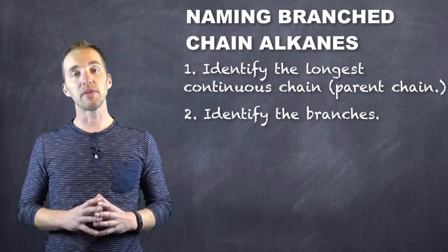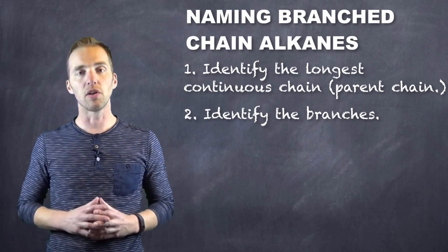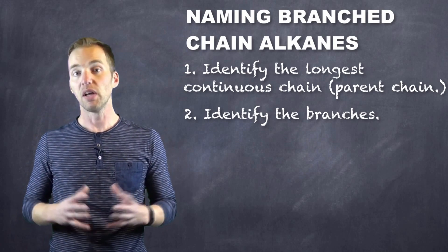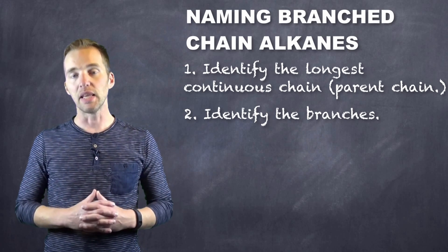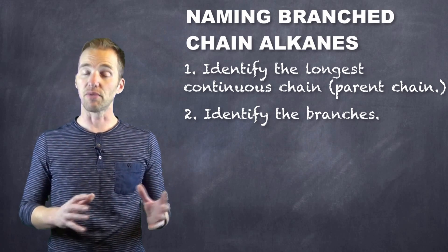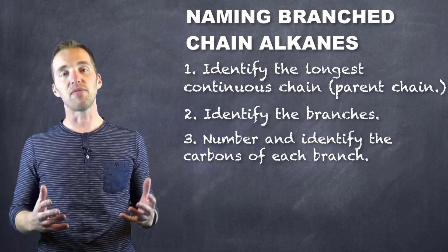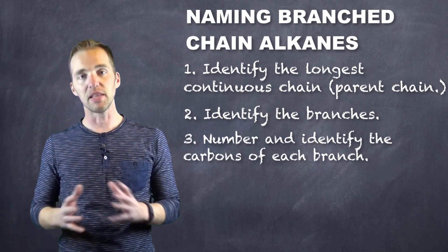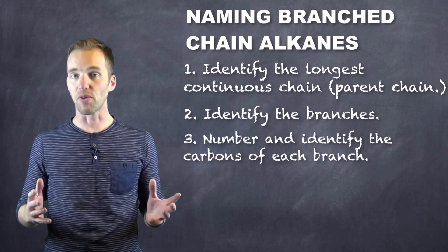Now it is possible that these branches, especially when we get into longer molecules, can come off of multiple places in that particular chain. That is, they can branch off of different carbons. So we have to identify by number the carbon that these branches are stemming from.